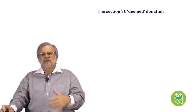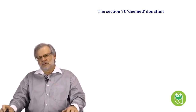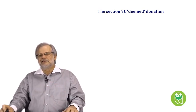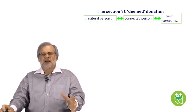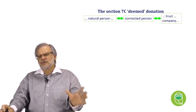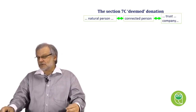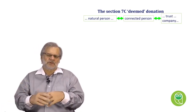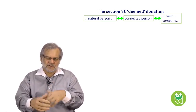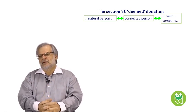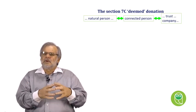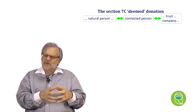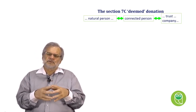Section 7C is a new problem that we have to deal with in the interest-free loan space. It applies where we've got a natural person who is a connected person in relation to a trust or a company, and I'll do one with the company specifically to show some of the new planning nightmares that this has created. A natural person — a connected person in relation to the trust.